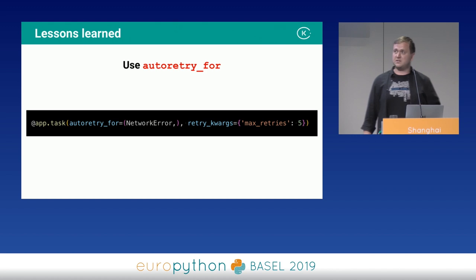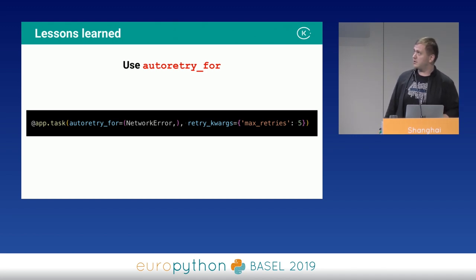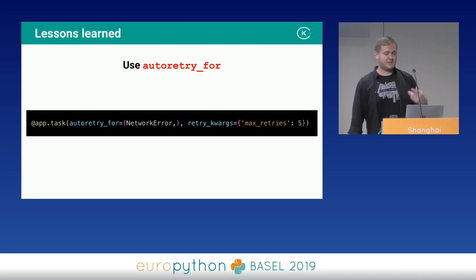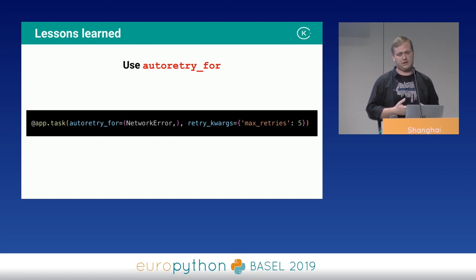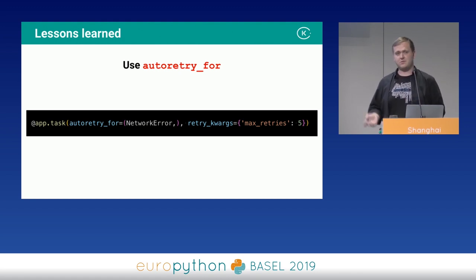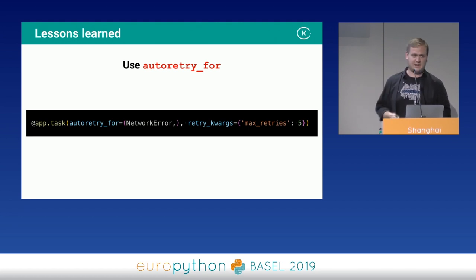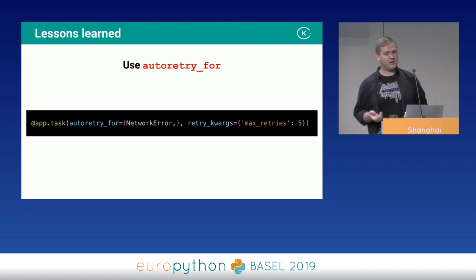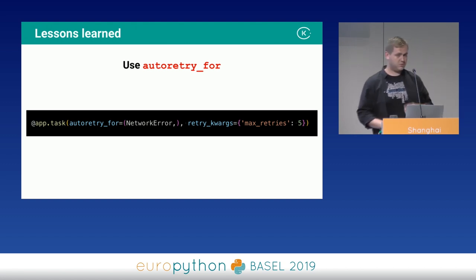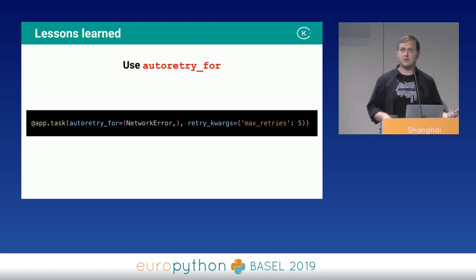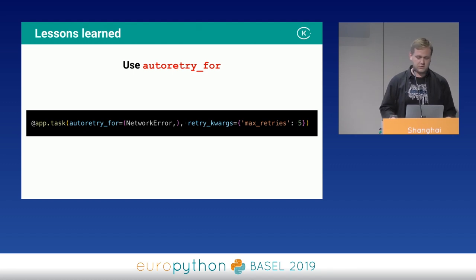Use autoretry_for — a really handy feature where you specify an exception on which the task will be retried. But again, don't forget max_retries, otherwise you can end up with an endless loop occupying one of your workers. Just define the exception you want retried and you're good to go.